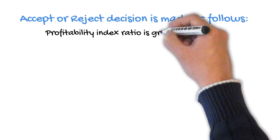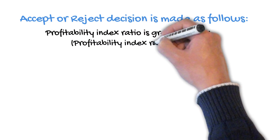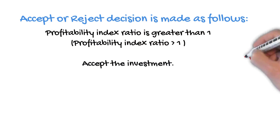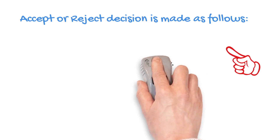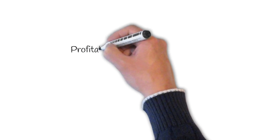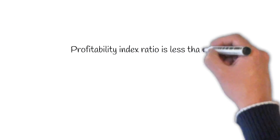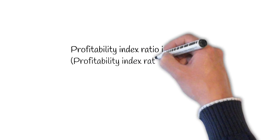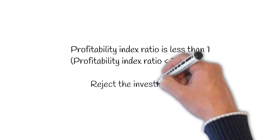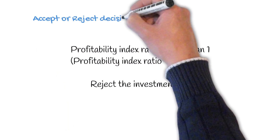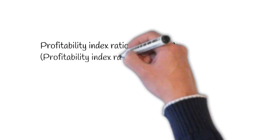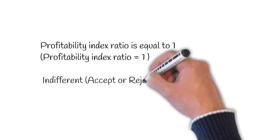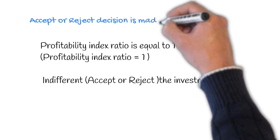Now we will discuss Profitability Index rules. If the Profitability Index is more than 1, accept the project for investment — it is viable for investment. If the Profitability Index is less than 1, then we cannot accept the project for investment — it is not viable for investment. In case the Profitability Index is equal to 1, then we are indifferent between accepting or rejecting the project.